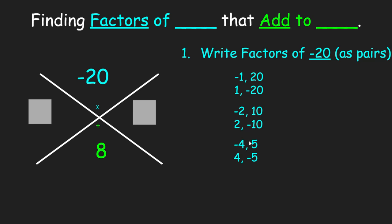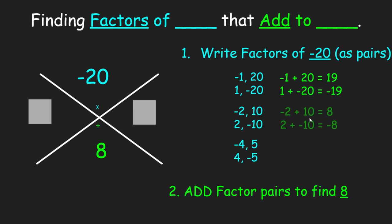Negative 1 plus 20 is positive 19. 1 plus negative 20 is negative 19. Negative 2 plus 10 is 8. 2 plus negative 10 is negative 8. Negative 4 plus 5 is 1. 4 plus negative 5 is negative 1.